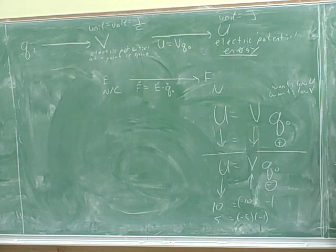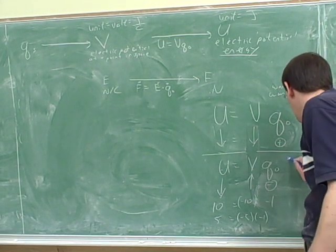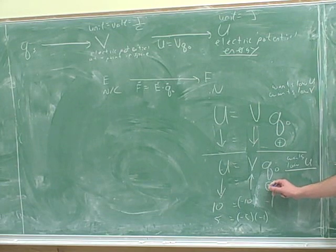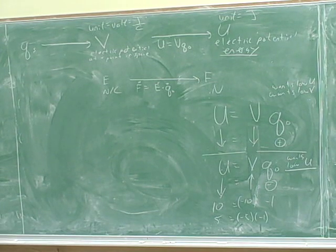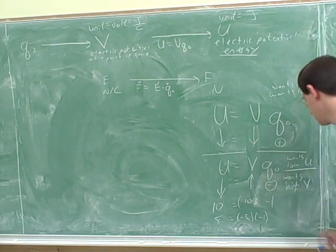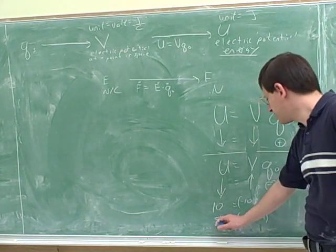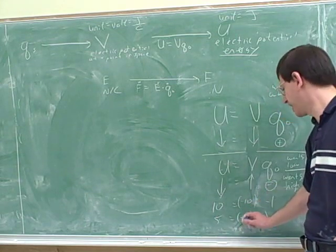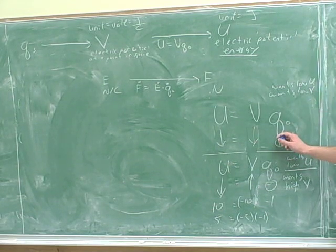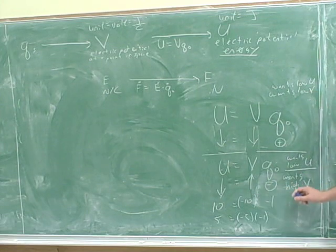Now, do charges want high or low energy? Low. Everything wants a low energy. But how would a negative test charge lower its energy — by moving to a high potential or a low potential? By moving to a high potential, because these are inversely related. If you want a low energy, you need a high potential. You can see that here: 5 has the lower energy. If we want the lower energy, we need the higher potential because negative 5 is bigger than negative 10. Notice everything wants to lower its energy, but whether you want to lower your potential depends on what type of charge you are. Positive charges want to lower their potential, but negative charges want to increase their potential.